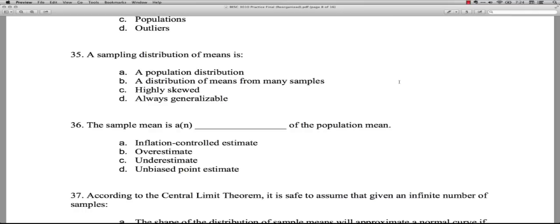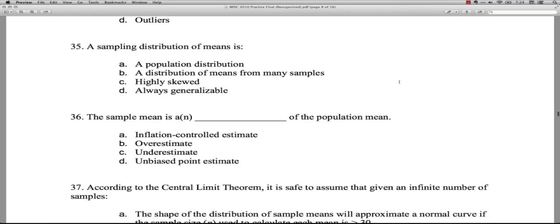Now, highly skewed? In fact, no. If your sample is, say, over 30 - 30 is the general rule of thumb - if you have more than 30 in your samples, almost no matter what the original shape of your distribution, your sampling distribution will be normally distributed. It'll be a bell curve. And D, always generalizable, that's just nonsense and an answer thrown in there.